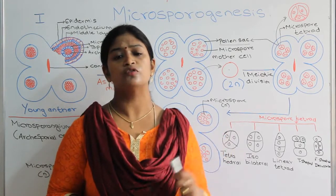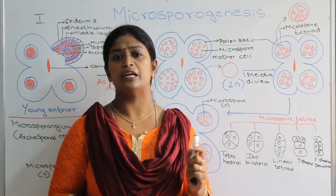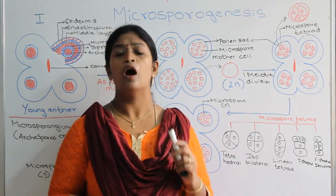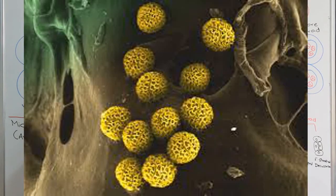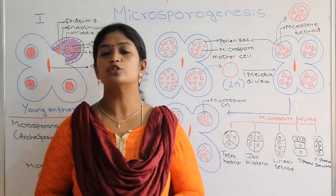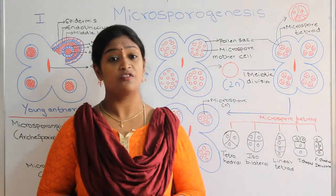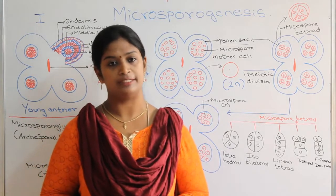We are in the process of studying about male gamete formation. Before studying that, we need to know about microsporogenesis — how the microspores form and how the microspores get converted into the pollen grains. The process of formation of microspores from the microspore mother cell is called microsporogenesis.